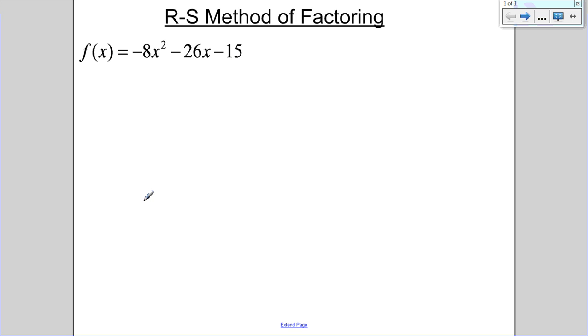So the RS method is great. It always works if a quadratic is factorable, even if there's not anything in front of my x squared, even if there's just a coefficient of 1. But it's really useful if there is something in front of my x squared.